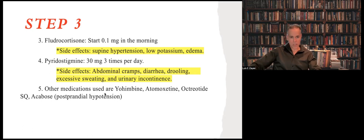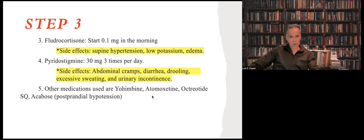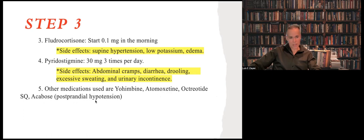Other medications are used especially in large academic centers that specialize in autonomic dysfunction. They use other types of medications — one that is very difficult to pronounce — and there is some data suggesting it helps specifically in patients who have postprandial hypotension, which is low blood pressure after eating. This is a medication I would try if someone is complaining of low blood pressure after meals. The problem is that it is often very difficult to get approval from medical insurance.